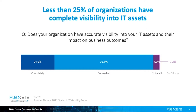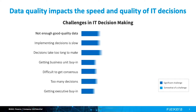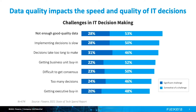Most organizations have some limited view into their IT estate, but only 24% find their data completely reliable, according to Flexera's 2021 State of Tech Spend Report. IT leaders report that not having enough good quality data is a significant challenge to decision making — without reliable data, implementing decisions is too slow and decisions take too long to make.